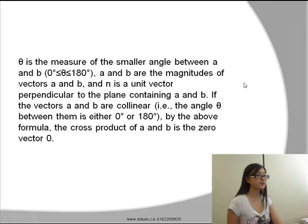If the vectors A and B are collinear, which means the angle theta between them is either 0 or 180 degrees, by the above formula the cross product of A and B is 0.